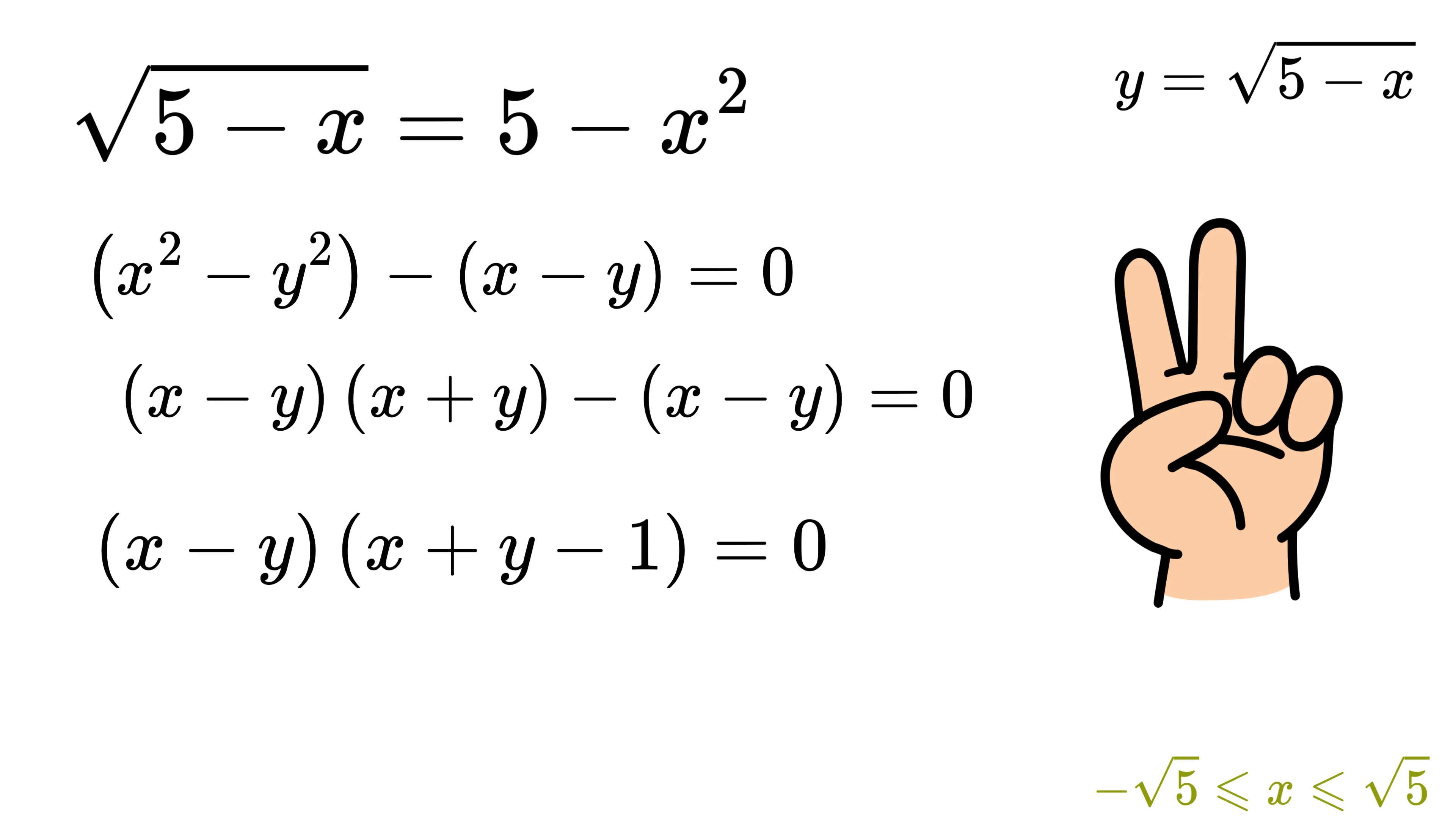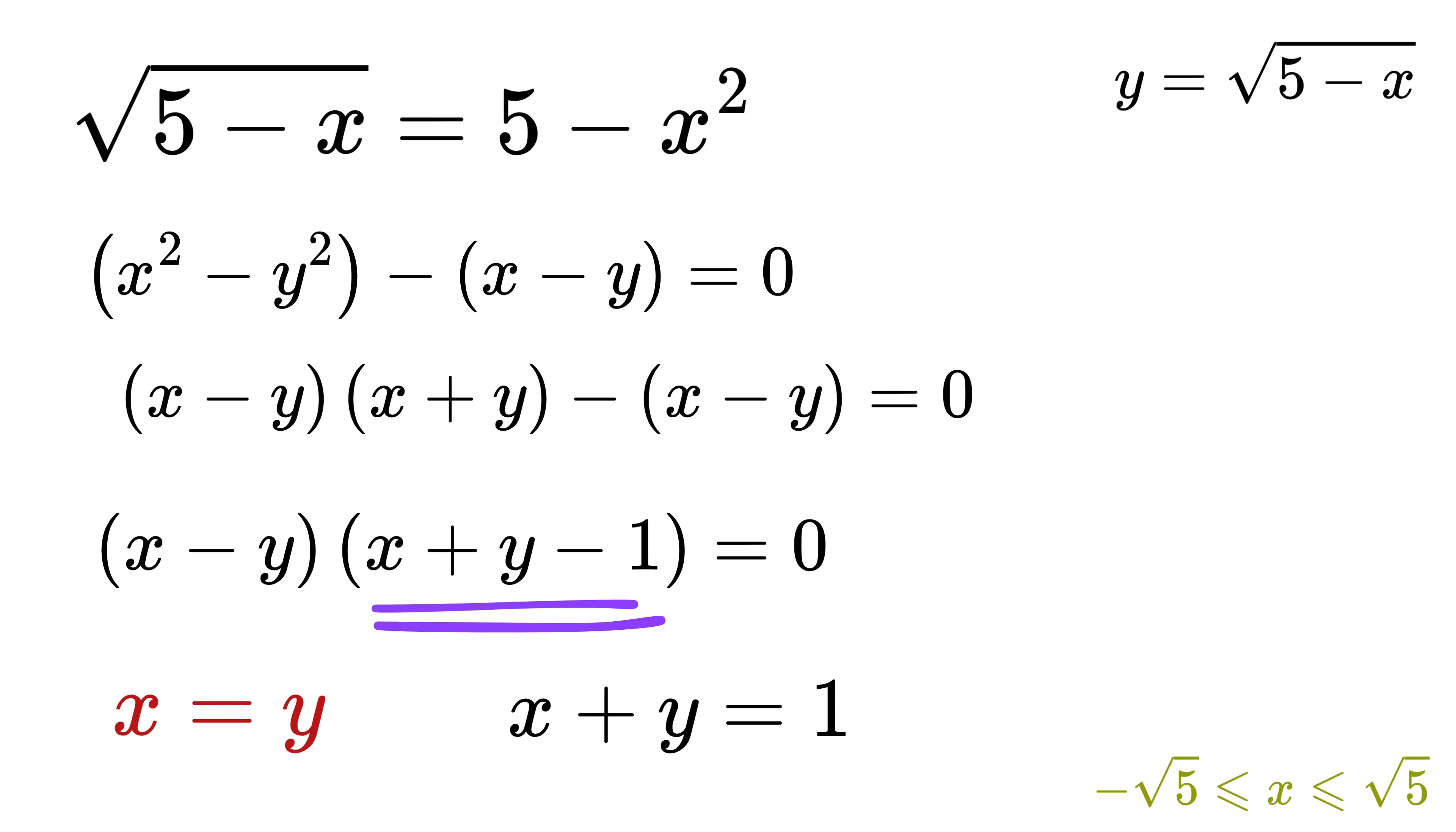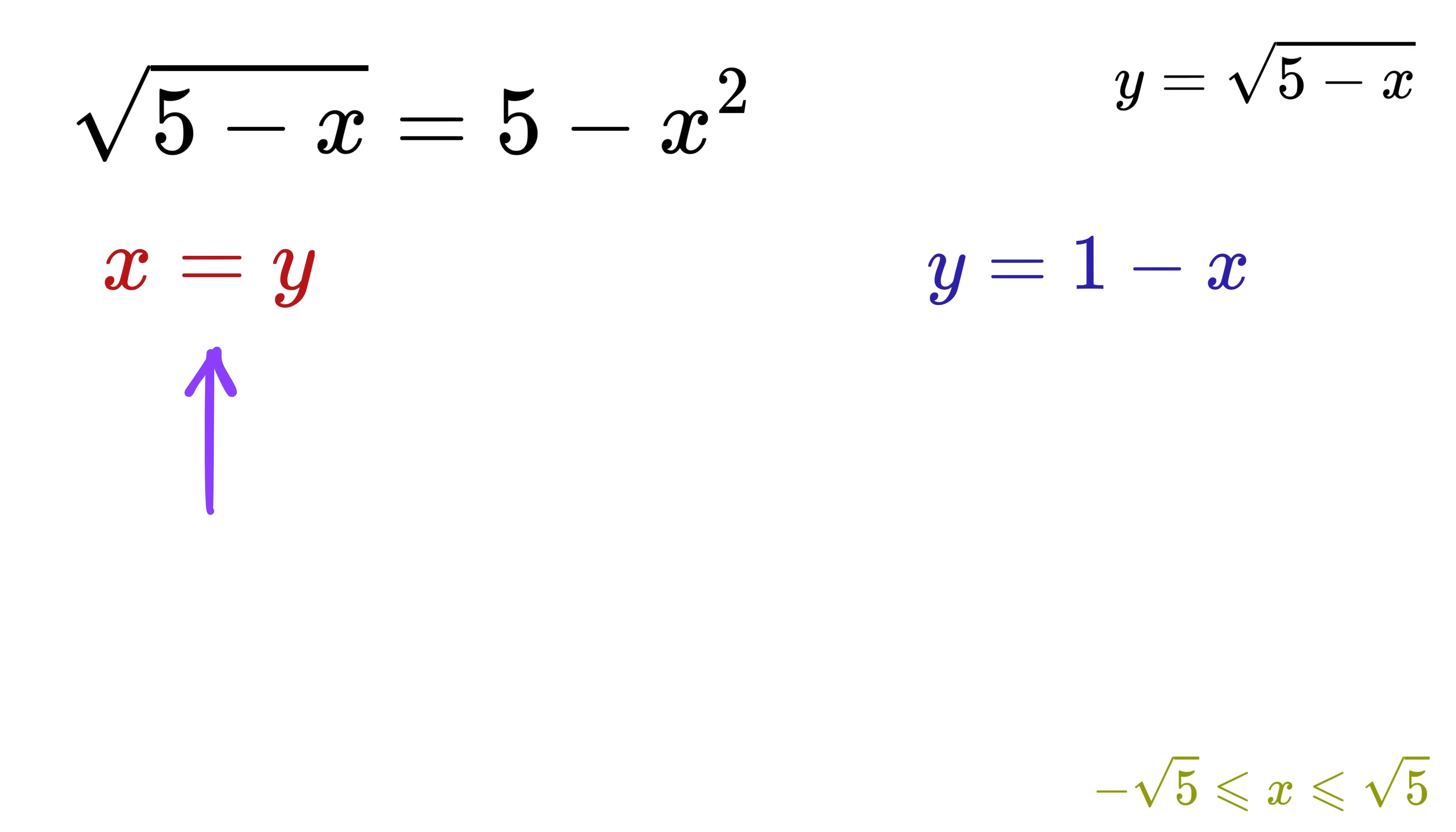This equation implies two possible cases, either x minus y equals 0 or x equals y, and the other case is x plus y minus 1 equals 0 or x plus y equals 1. This means y equals 1 minus x. First, let us solve this case.